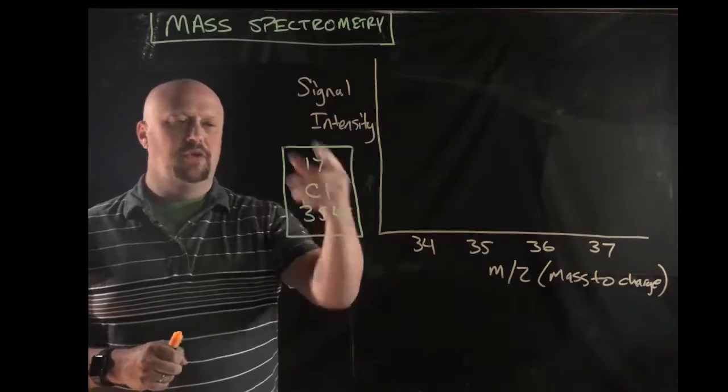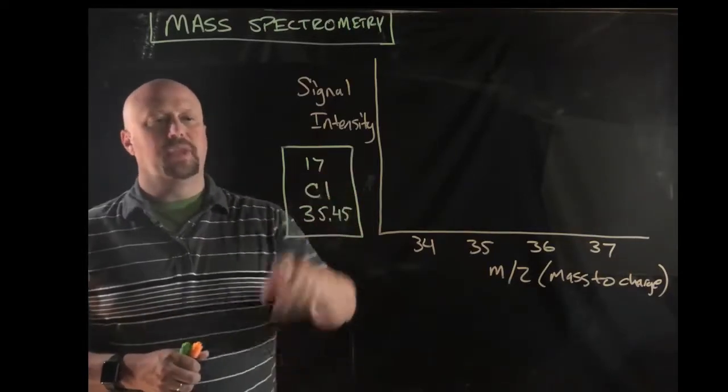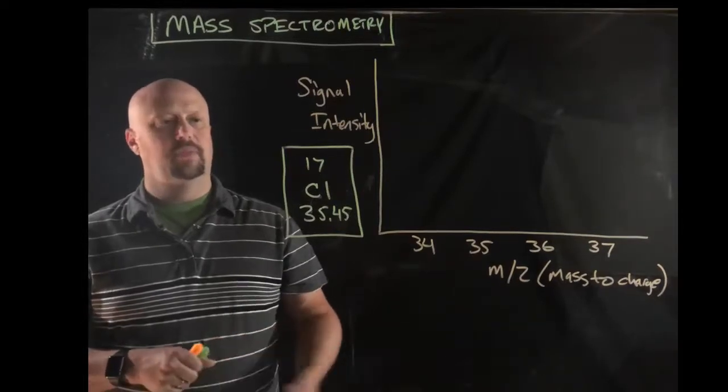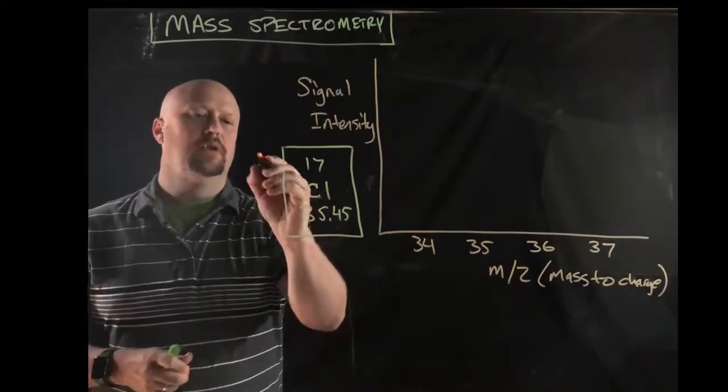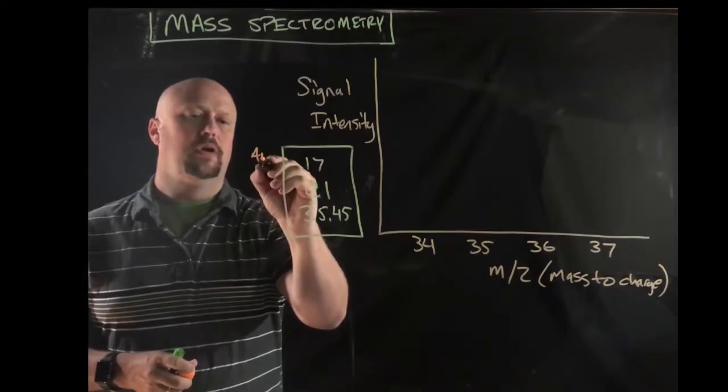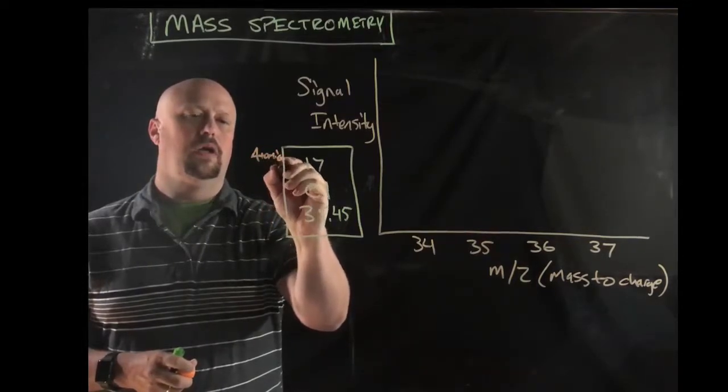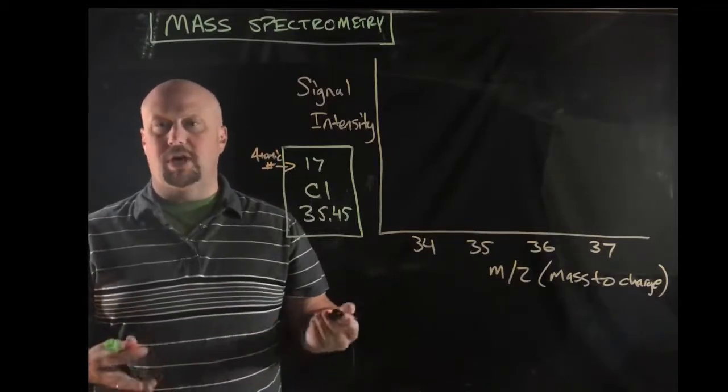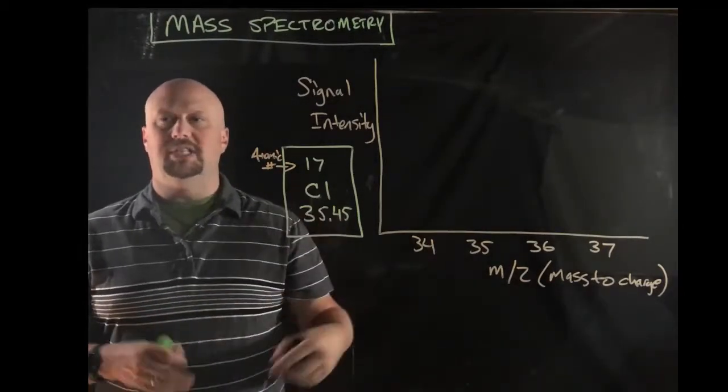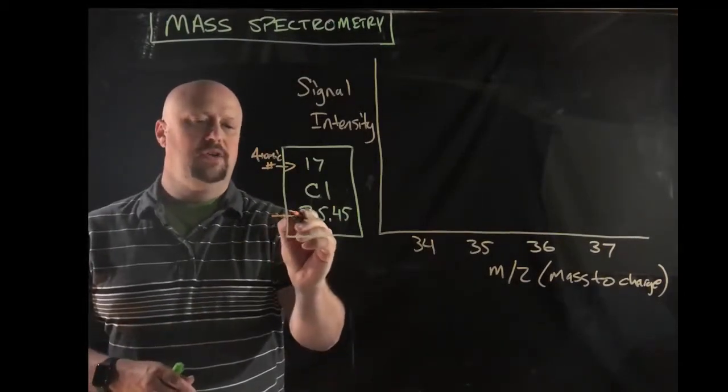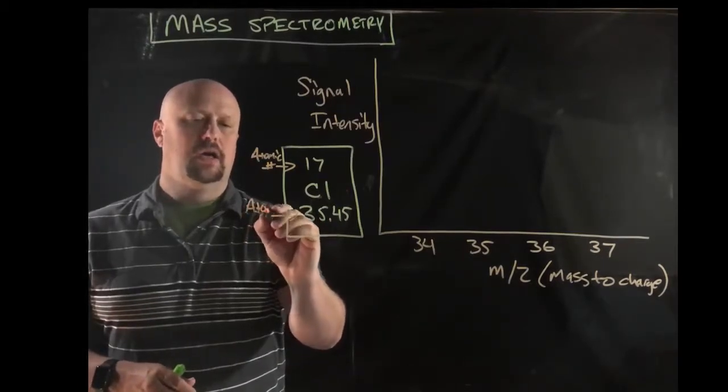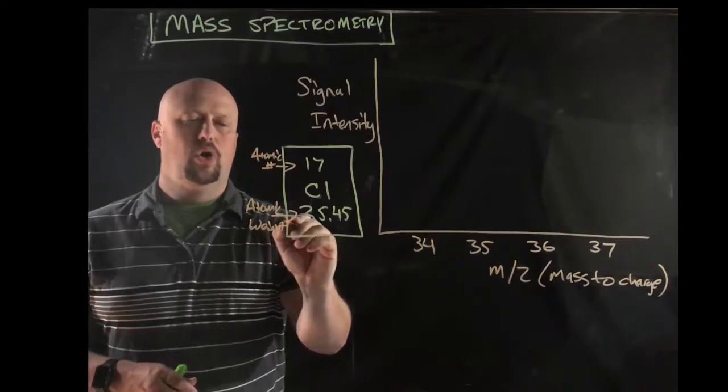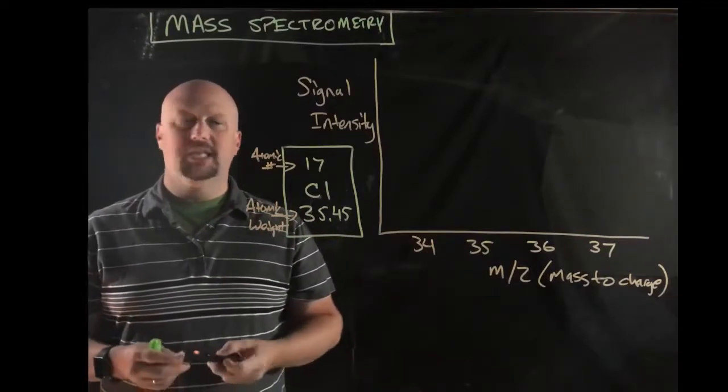Well, because if you remember, if you look at the periodic table, and you looked at a box for a particular element, we're going to use chlorine for our example. You've got a couple of numbers here. So you've got your atomic number. Remember, atomic number is how many protons does it have. And then, obviously, you've got the symbol for the element. And then you've got atomic weight or molar mass, we might say.